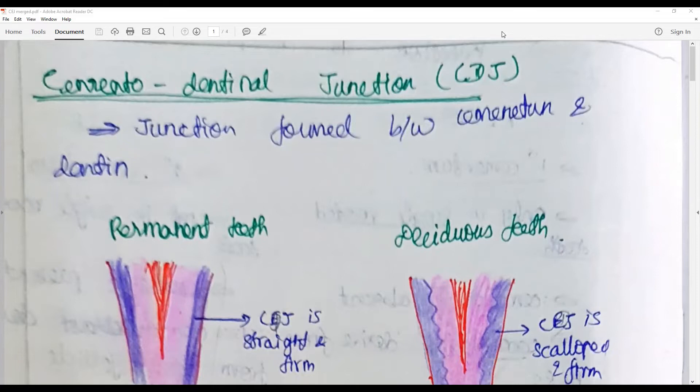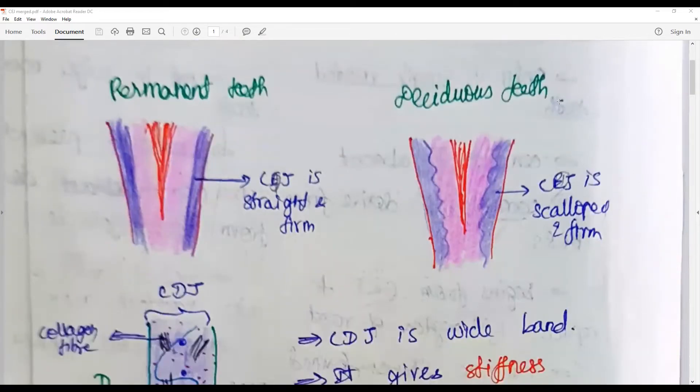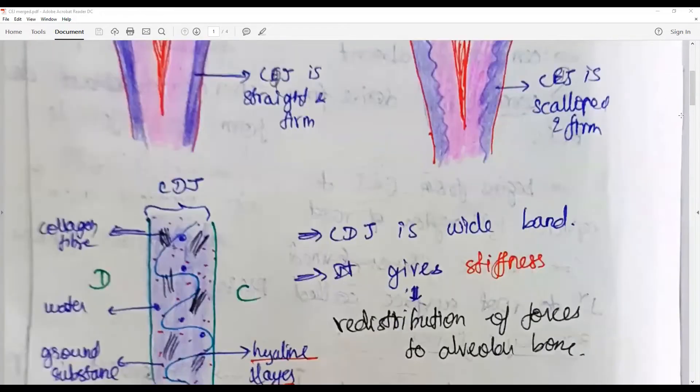It happens in the root and there is a distinct difference between the permanent teeth and the deciduous teeth. In the permanent teeth it is straight and firm, whereas in deciduous teeth it is slightly scalloped and firm in both instances.